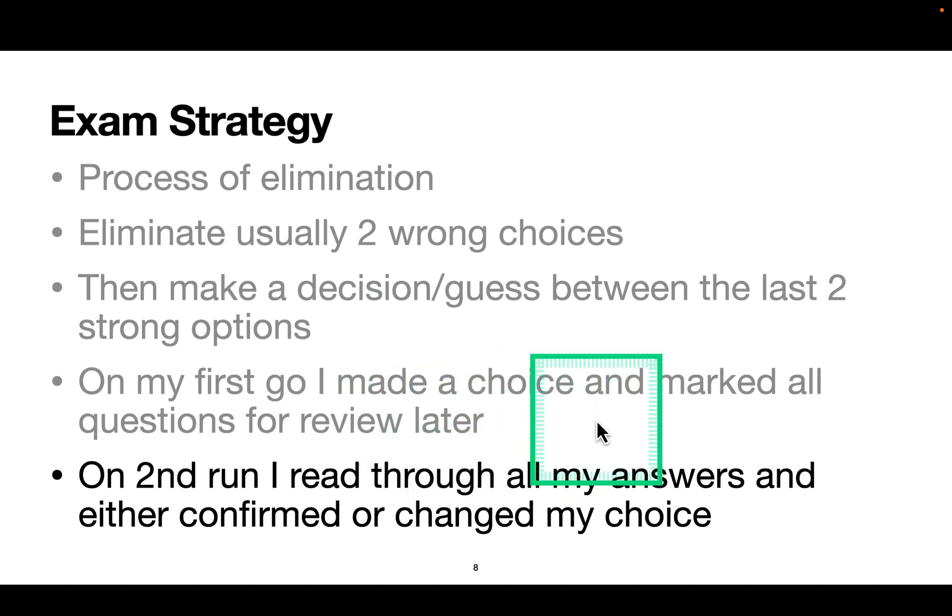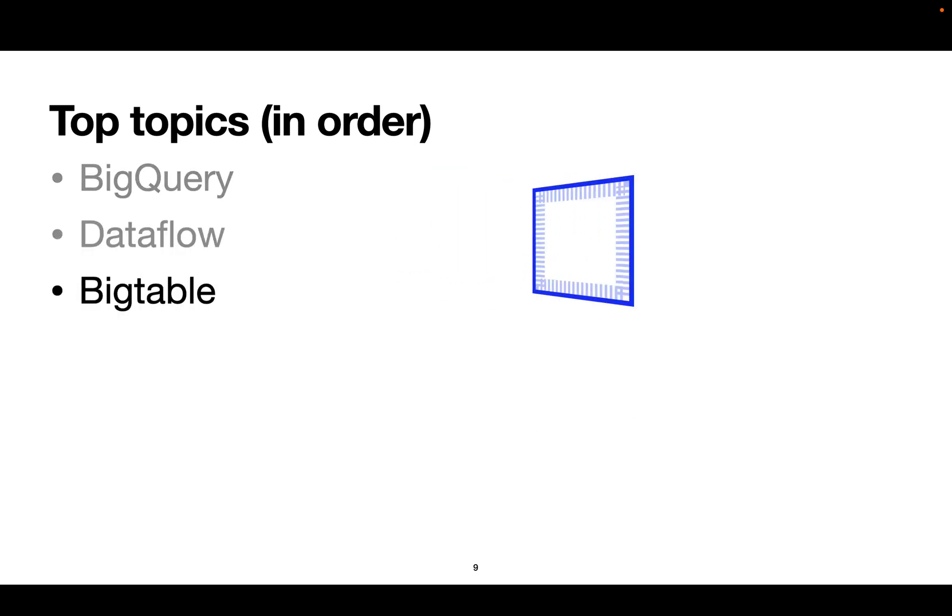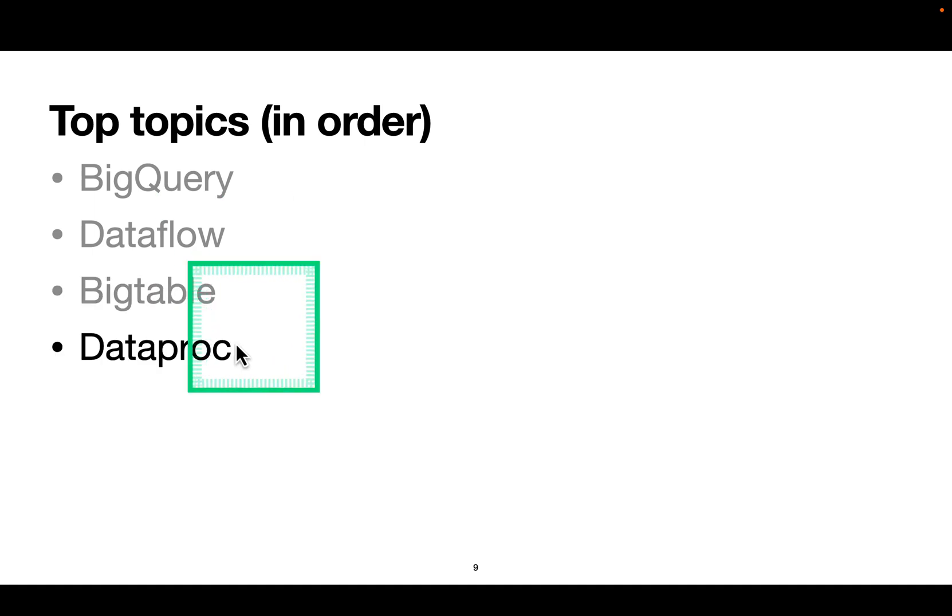Top topics in order: BigQuery, Dataflow, and BigTable. These are the bread and butter of Google Data Analytics exam. The top one is BigQuery. You should know everything about BigQuery: how the datasets, projects, users, tables, query options, views, BigQuery ML work. Next is Dataflow for data processing. This is their top product. BigTable is for NoSQL. These three you should know very very well. Then Dataproc, which is Hadoop on Google Cloud, and Pub/Sub, which is a messaging system.